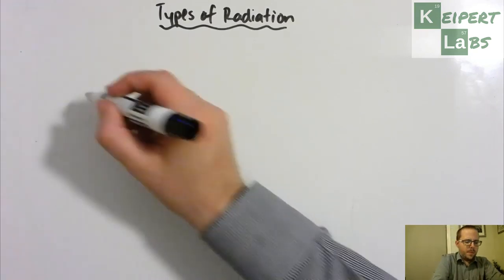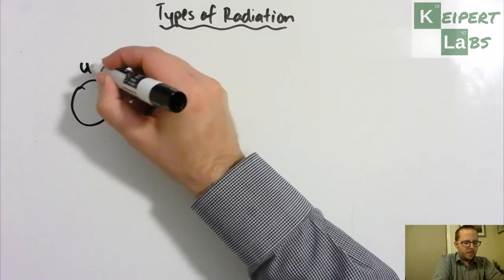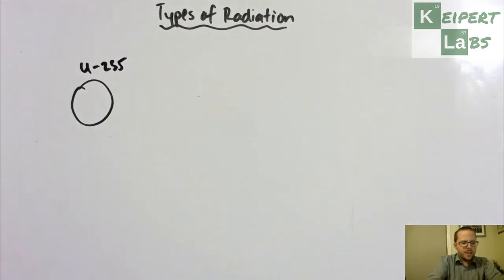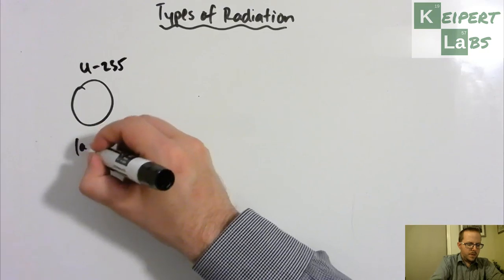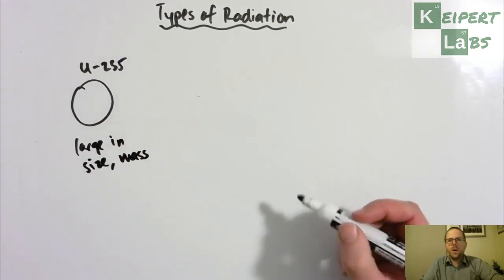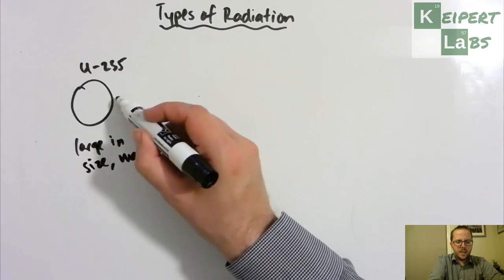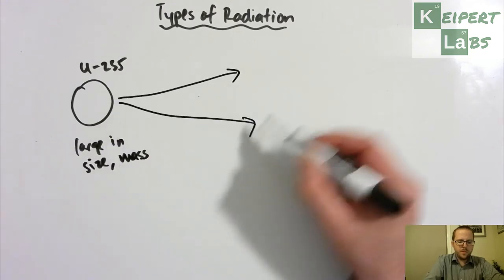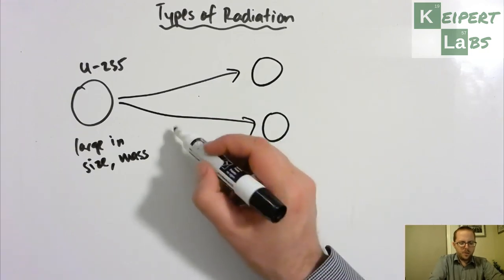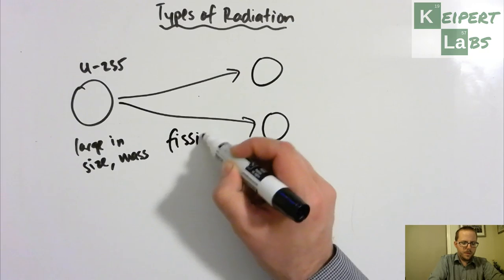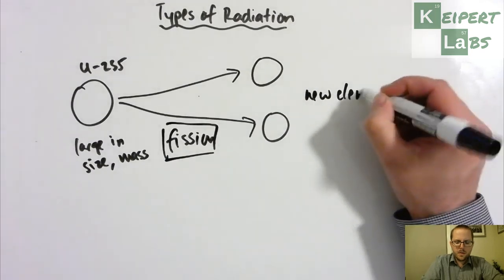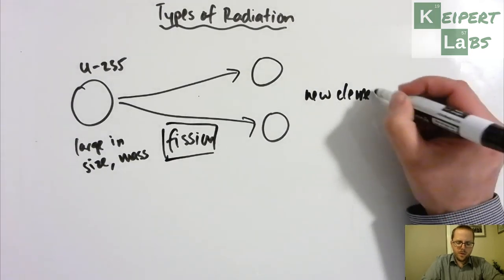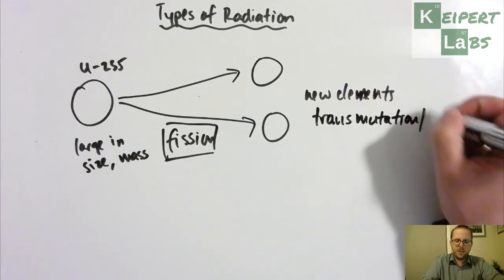So far we've looked at this idea that there are very heavy elements like uranium, that the nucleus of that element is large in size and in mass, and that what often happens is that at some point spontaneously it will break apart to form two smaller nuclei through the process of nuclear fission, of this splitting process. And we have formed new elements, so therefore we call this process transmutation, the production of new elements.